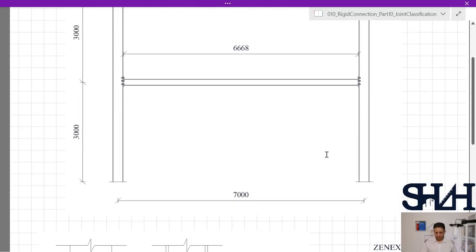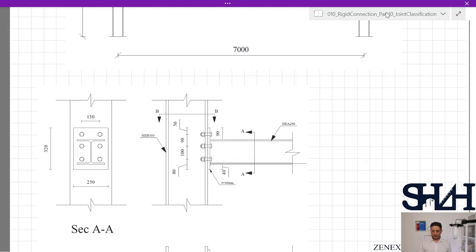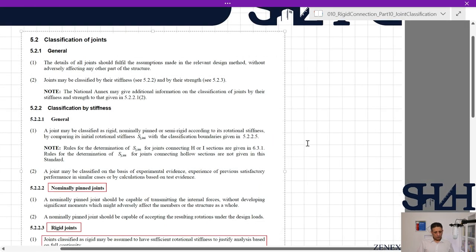This is our example you are familiar with, and this is the detail. In Eurocode, Class 5.2 covers classification of joints, and then 5.2.2 addresses classification by stiffness.